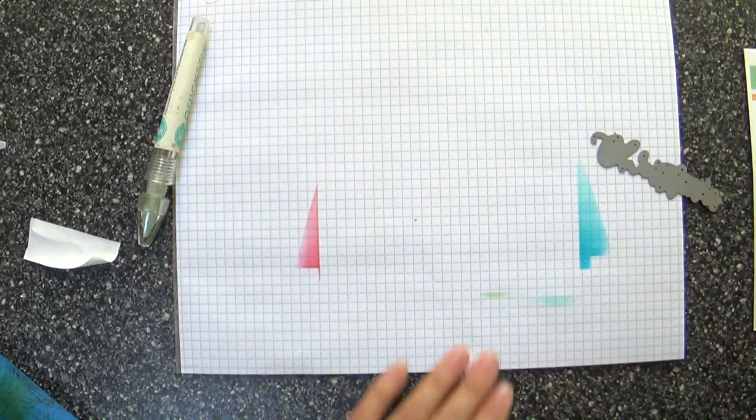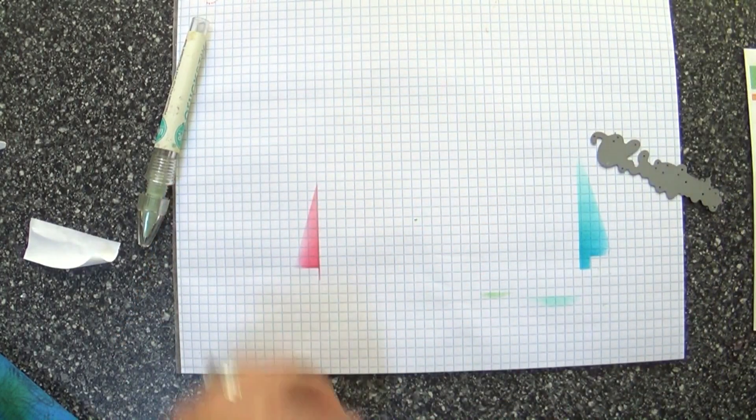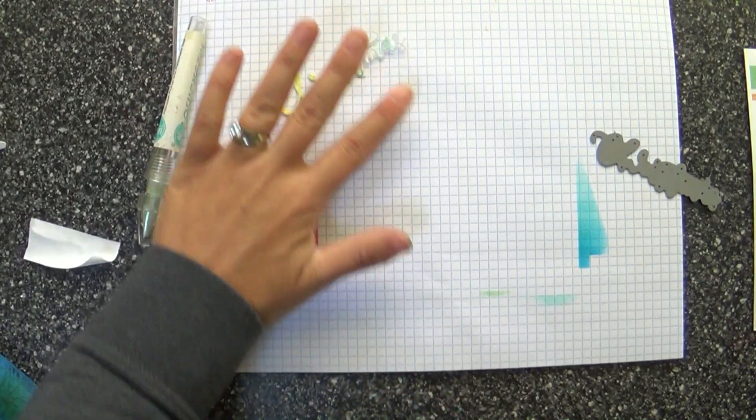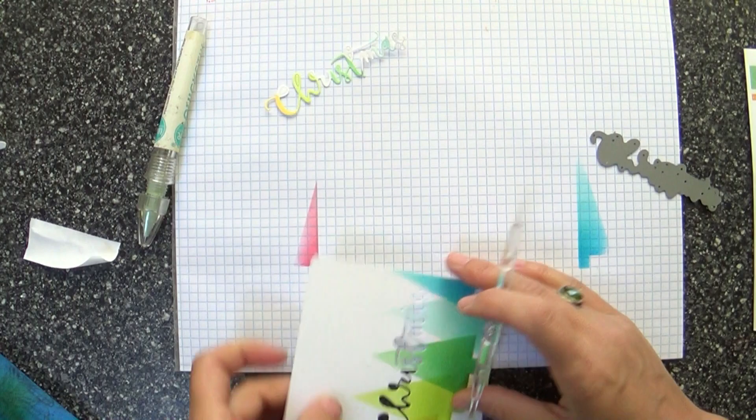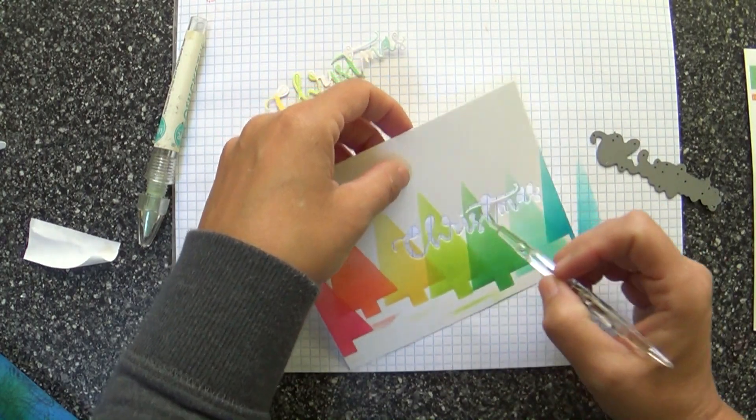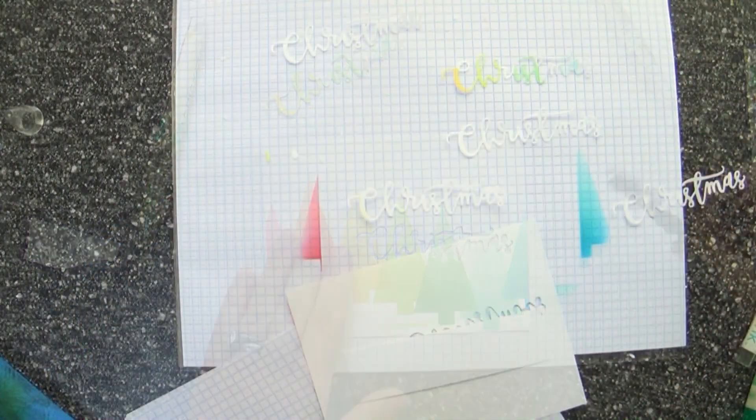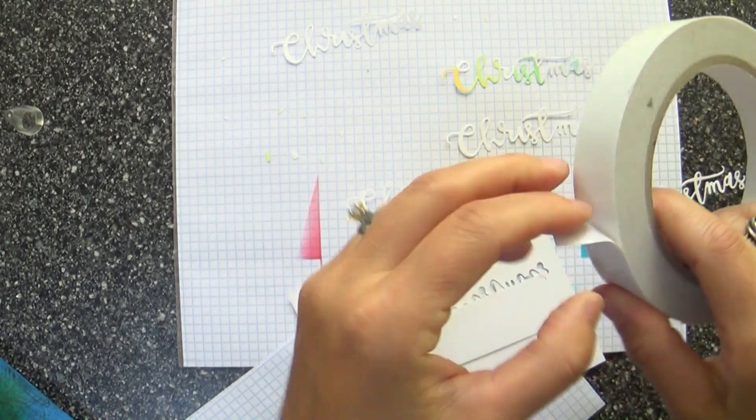You've seen me do a card like this before where I die cut my sentiment right into the panel, right into the design and everything. I love this look because it doesn't take away from your beautiful color scheme and your design, but yet you can fit your sentiment in there.